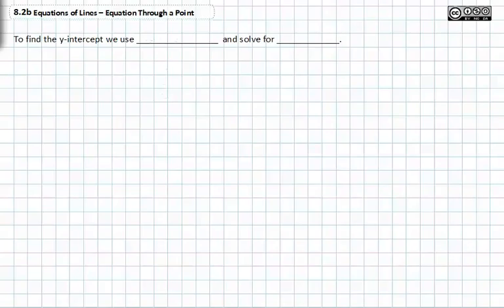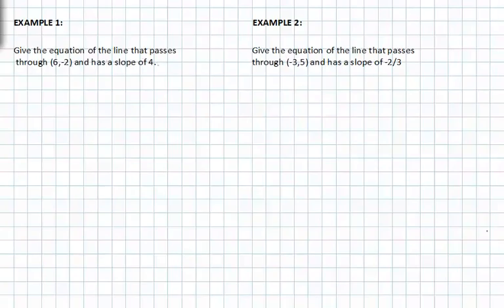To find the y-intercept, we use y equals mx plus b, which is what we used last video for finding an equation of a line, and we solve for b. Remember that b represents the point at which your line crosses the y-axis.